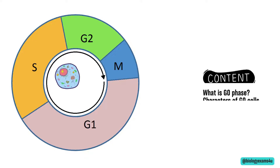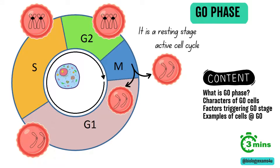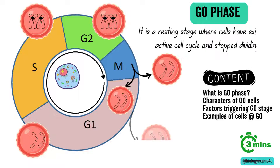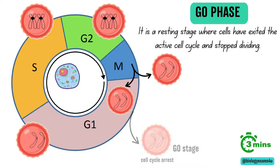So what is a G0 phase? It is a resting stage where cells have exited the active cell cycle and stop dividing. The cells in G0 phase remain metabolically active but do not divide unless stimulated by appropriate external signals like growth factors. It is considered as a part of G1 phase, as cells can re-enter the cell cycle from G0 into the G1 phase.